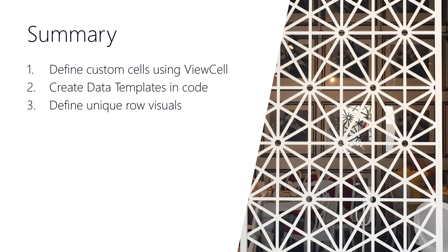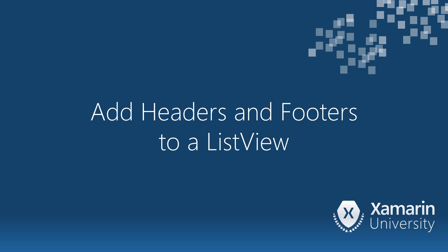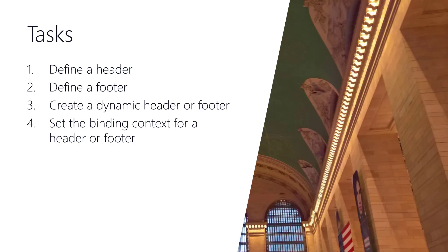That brings us to the end of our first objective introducing the view cell and creating data templates. Next, let's look at how to add headers and footers into the ListView. We'll define what a header and footer are, then see how to create dynamic headers and footers based on runtime values by setting the binding context for the header or footer.